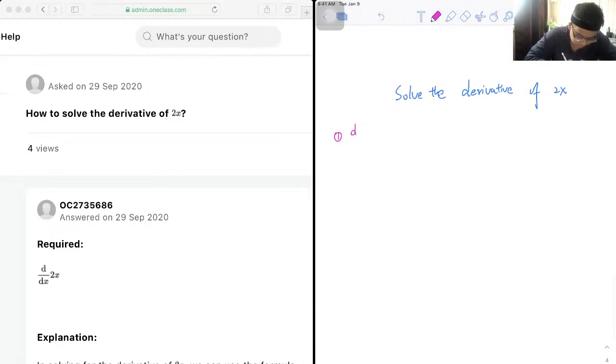So we know d/dx of nx is equal to n, where n is constant.